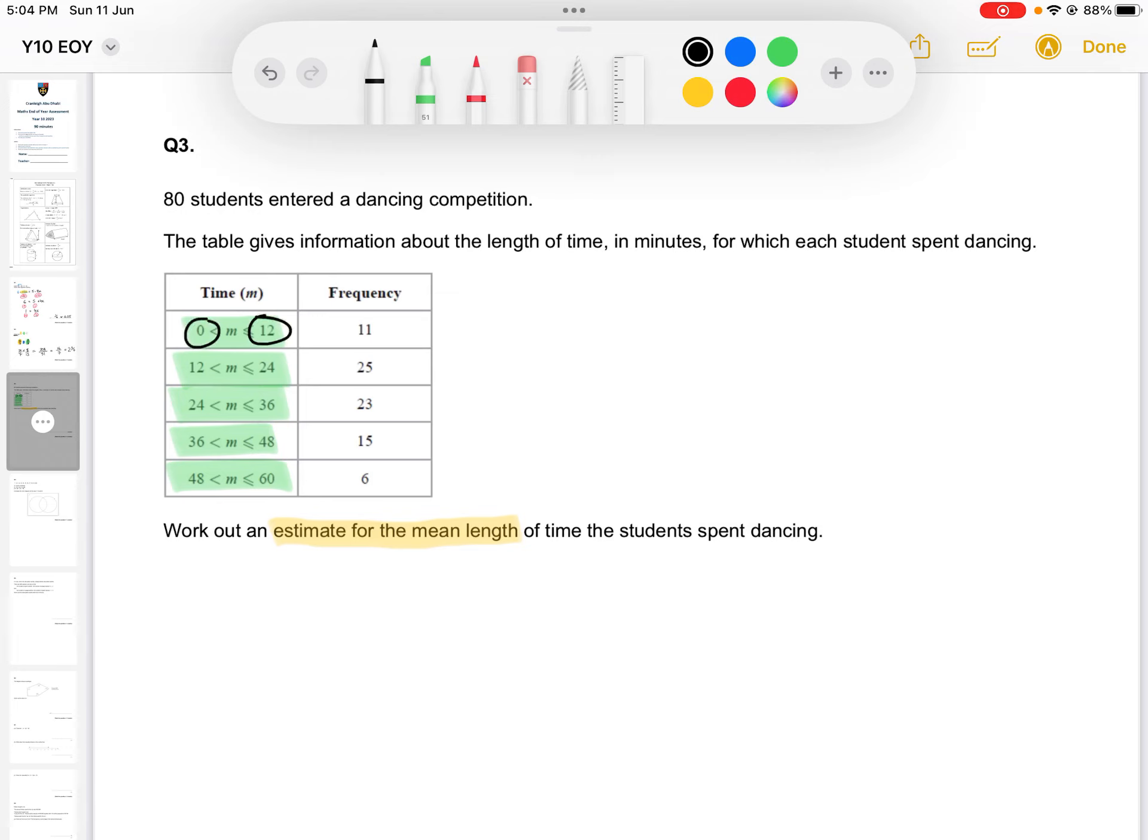The middle between 0 and 12 being 6, 12 and 24, 18 is in the middle, 30, 42 and 54.